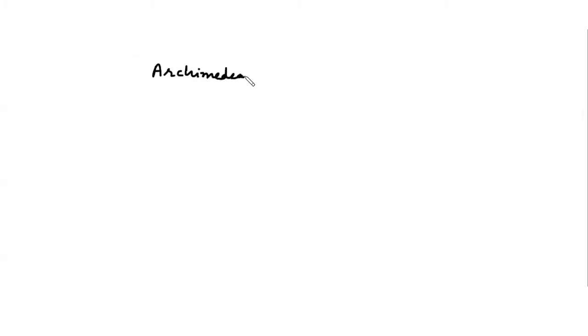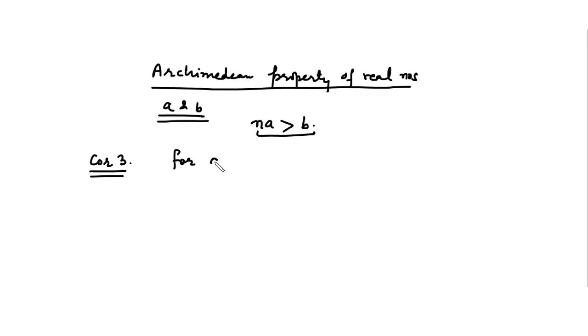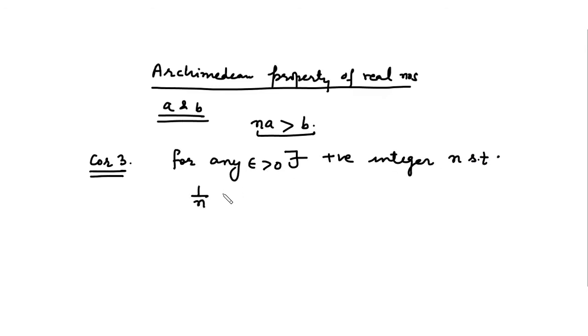In the previous video I explained the Archimedean property of real numbers. This property says that whenever you have two real numbers a and b, there always exists a positive integer n such that n times a is greater than b. Now consider Corollary 3 of this theorem: for any epsilon greater than zero, there exists a positive integer n such that one over n is less than epsilon.